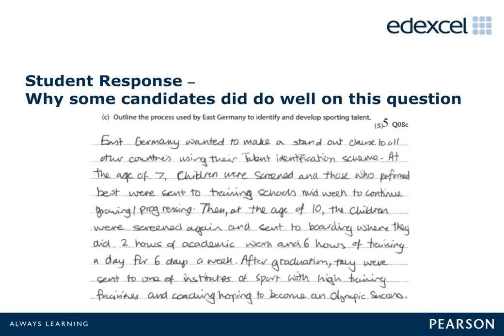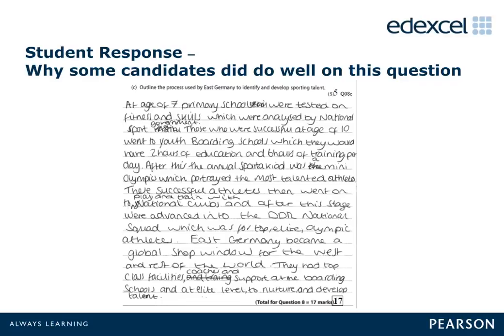Maximum marks were awarded for question 8c, which gained 5 marks for: age 7 children were screened; those who performed best were sent to training schools; at age 10 sent to boarding school; two hours of academic work and six hours of training; and institutes of sport. Another comprehensive answer was awarded all 5 marks for: screening and tests for 7-year-olds; National Federation of Sport analysing results; at age 10 going to sports boarding schools; six hours of sport and two hours of lessons; and annual Sportiads.